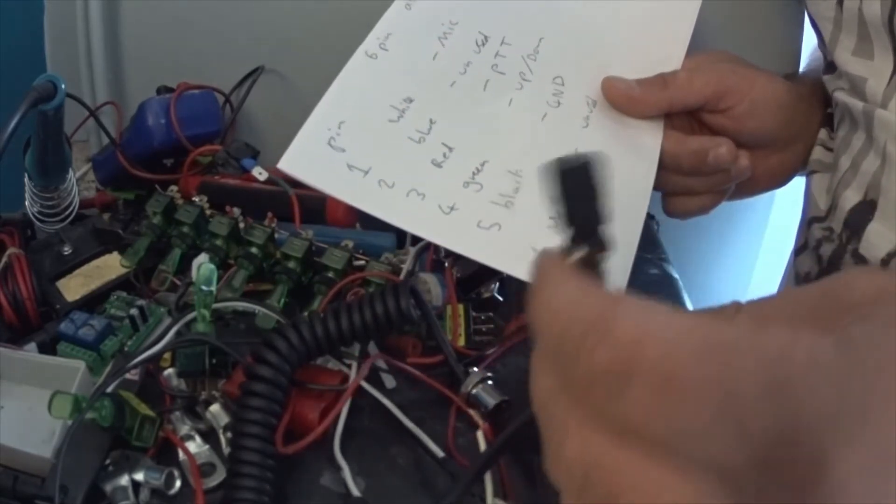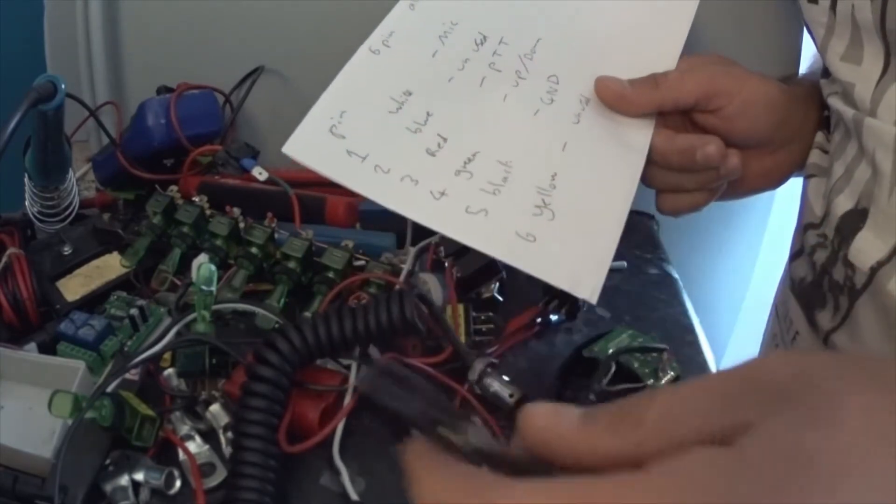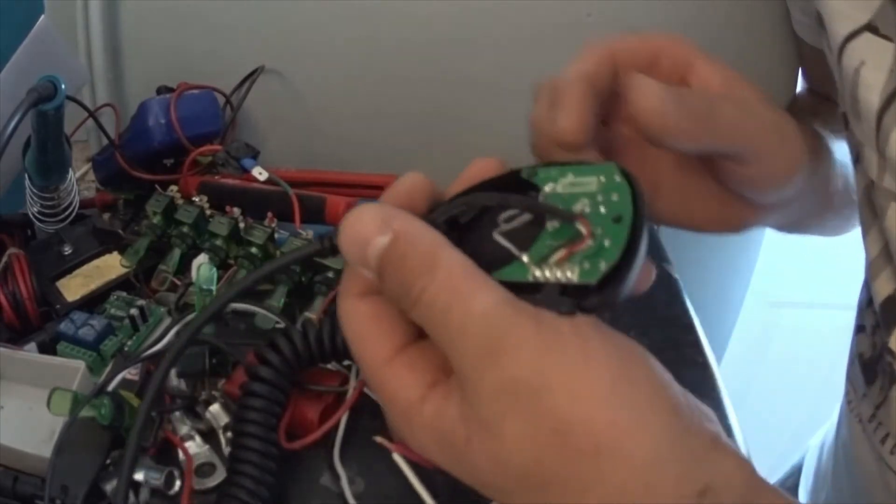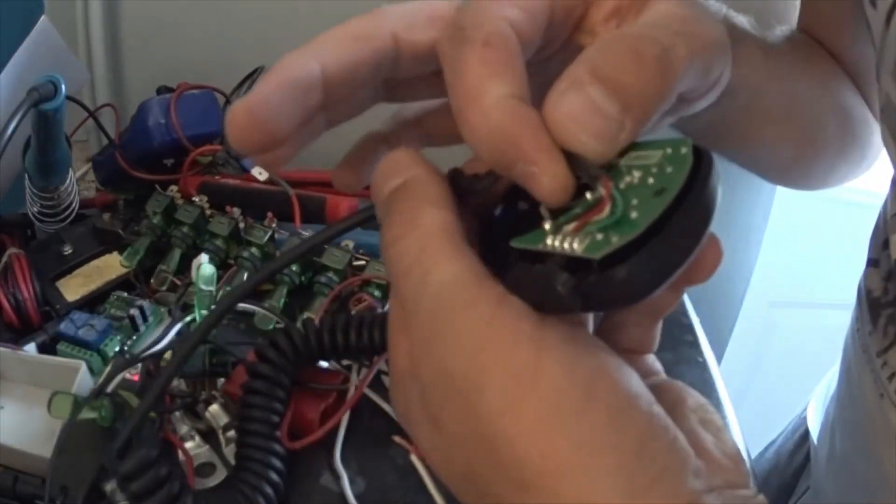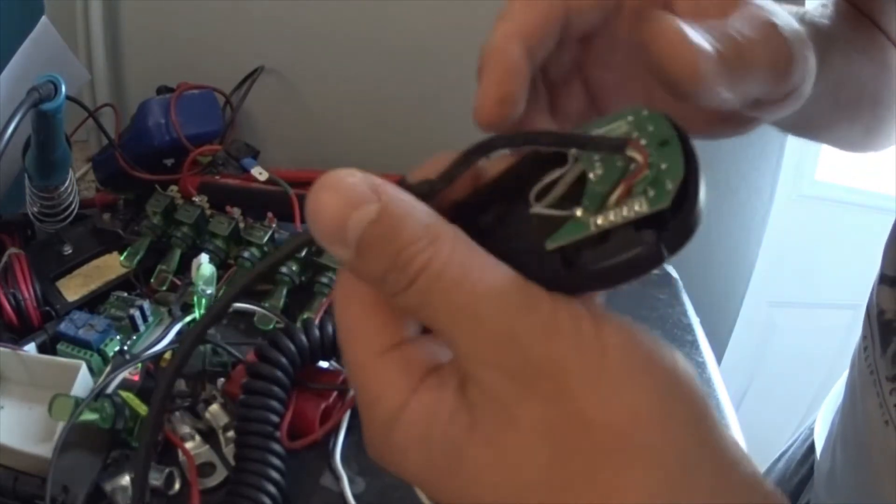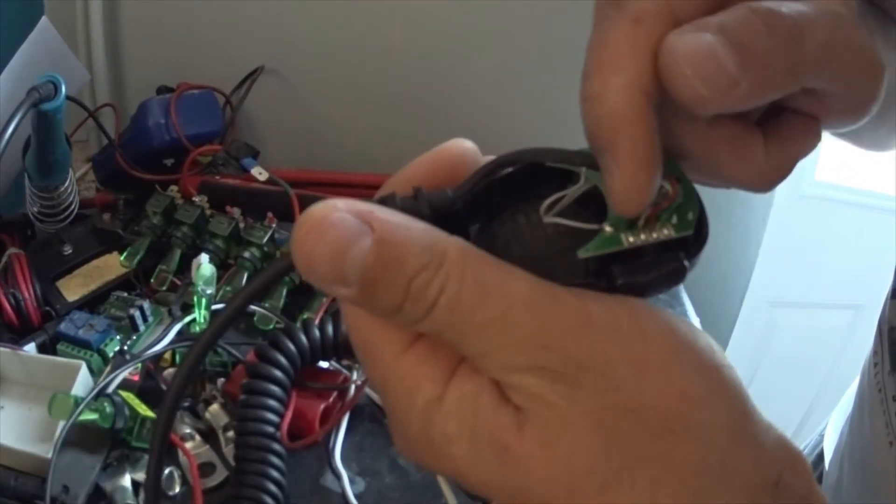So I just took this off to document the wire colours and what pin went where. And then if you look at the cable coming through the mic, you'll see that the yellow and blue have been chopped and we've got ground.